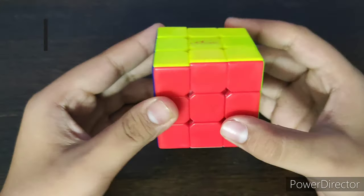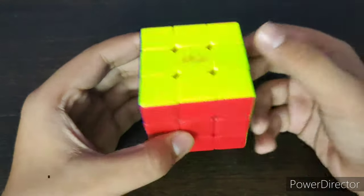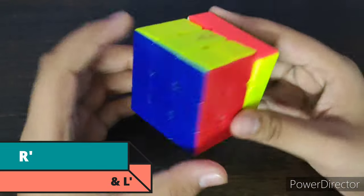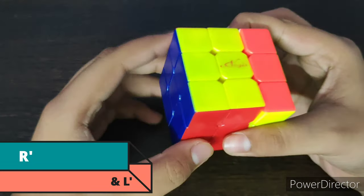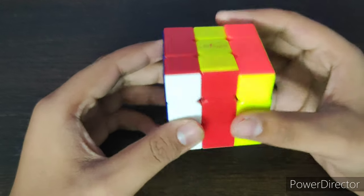Now the next comes the R prime and L prime. Now R prime goes like this, then L prime goes like this. You can see this.